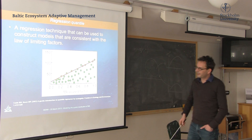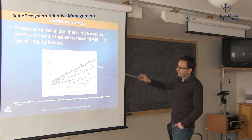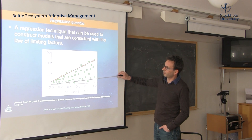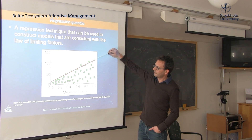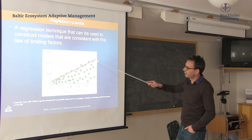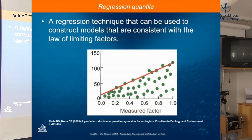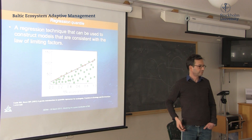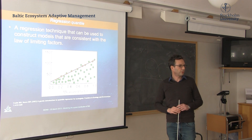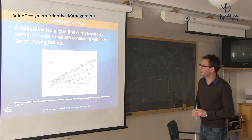What quantile regression does is, rather than modeling the mean expected value in the regression, it models specific quantiles. If you look at the upper quantiles — the red line here — it shows the maximum response given a measured factor. When your measured factor is low, you can never have a high response; when it's high, you can have a high or low response — anything between zero and the maximum. It's a nice way to develop models when your set of observations is incomplete, which is often the situation in real systems.